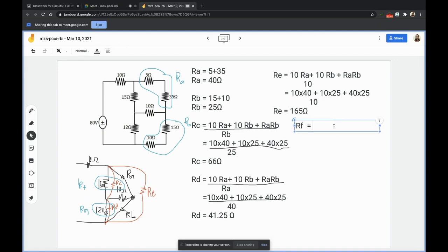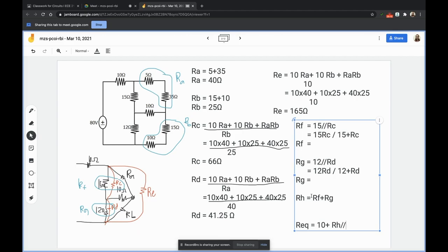So RF is equal to 15 parallel sa Rc, and that was 15 times 15Rc divided by 15 plus Rc. Then our RG is equal to 12 Rd divided by 12 plus Rt. Then our RH will be equal to RF plus RG.